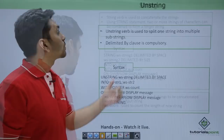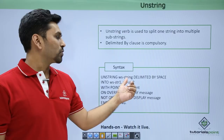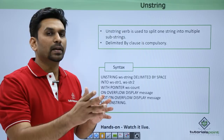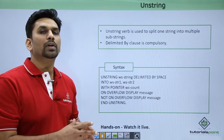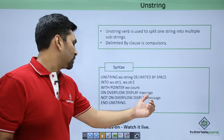The UNSTRING verb is used to split one string into multiple substrings. The DELIMITED BY clause is also compulsory here. The syntax is: UNSTRING W-STRING DELIMITED BY SPACE. When it encounters the first space, it stops and puts that part into W-STRING-1; when it encounters the next space, it puts that part into W-STRING-2. The WITH POINTER option counts the characters, and ON OVERFLOW / NOT ON OVERFLOW handle error and success messages. End with END-UNSTRING.